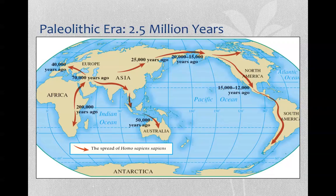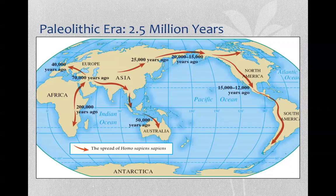We think the Paleolithic era lasted two and a half million years, but it's only in the last 200,000 years or so that people like us — Homo sapiens sapiens — actually existed and are part of the anthropological record. So while this is a very long time period of two and a half million years, folks with our brain capacity, Homo sapiens sapiens — wise thinking humans — show up about 200,000 years ago.